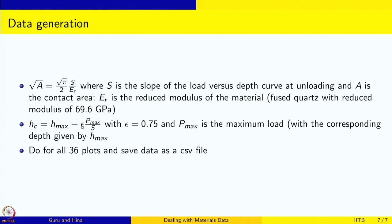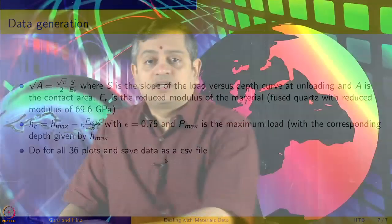By multiplying with epsilon you can get Hc. So we have Hc and A measured from the curves. We do it for all 36 plots, save the data as a CSV file, and then do the analysis on the CSV file to get the calibration curve.